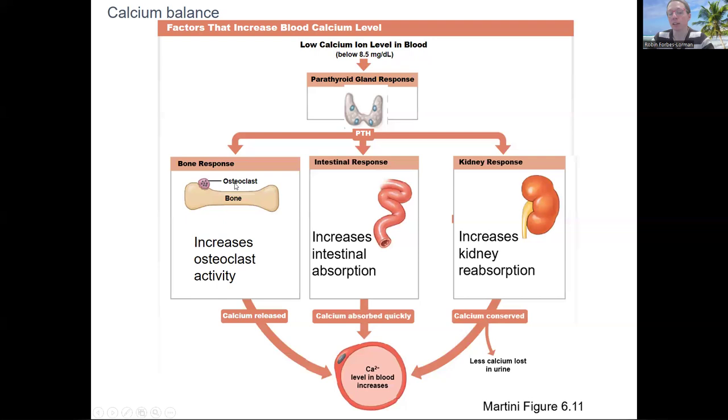Bones we talked about in the fall related to osteoclast activity, which releases calcium. Intestines, we talked about this semester. Not in detail, but we have talked about absorption that happens in the intestines, largely the small intestine. And so we can regulate how much calcium is absorbed and absorb more when levels are below.